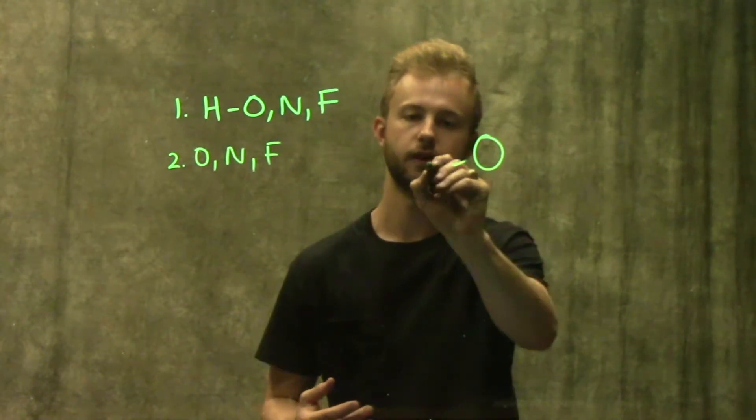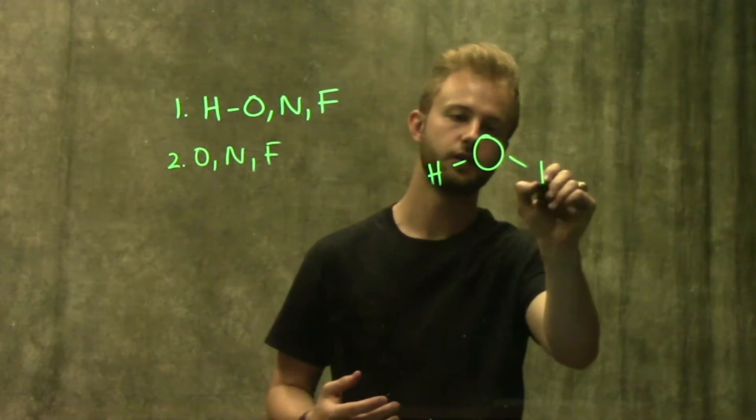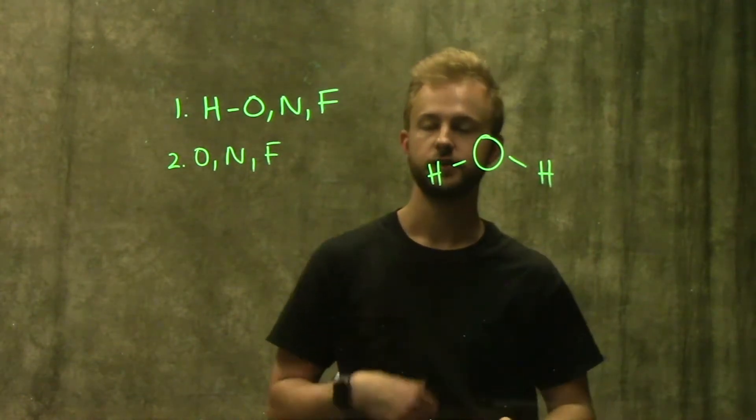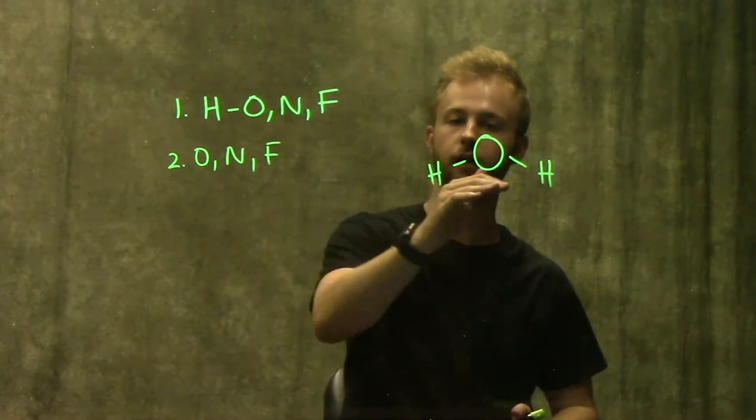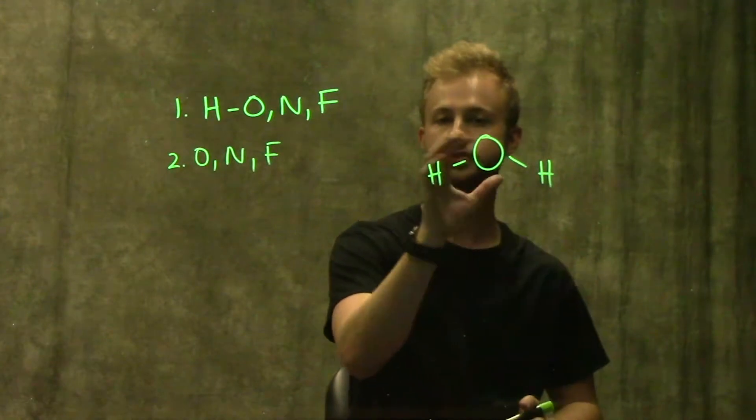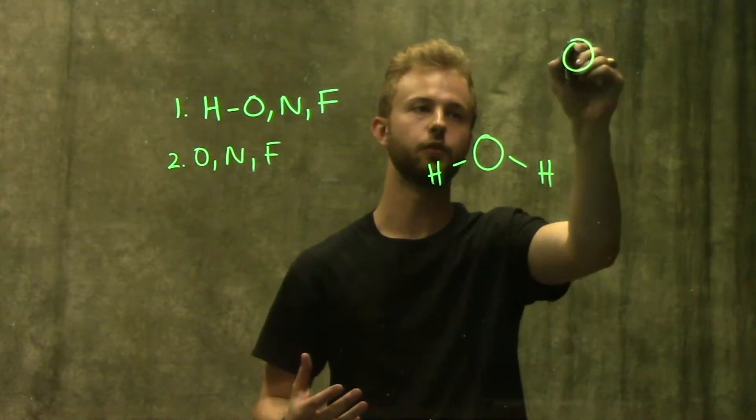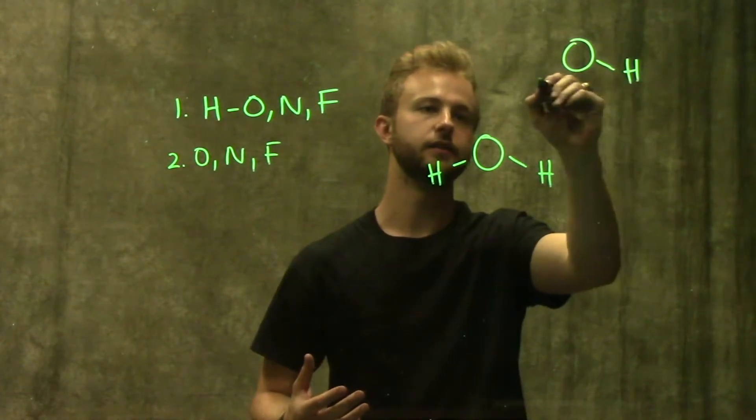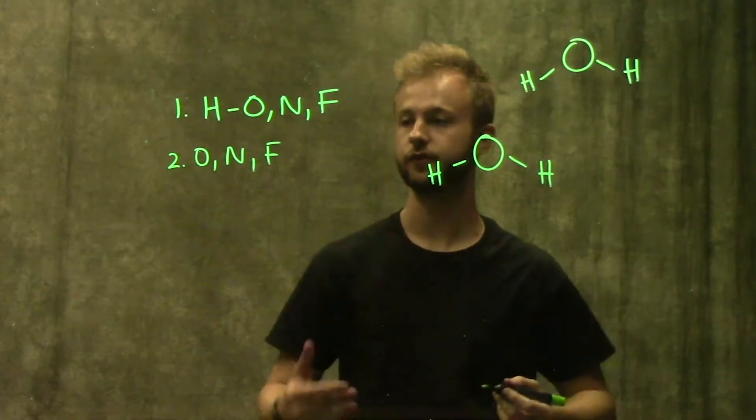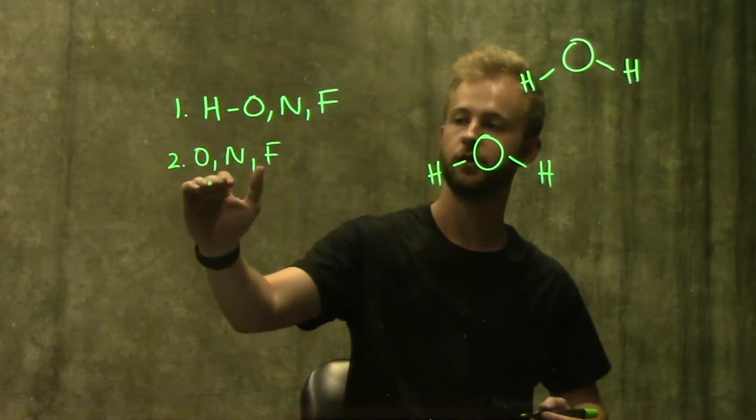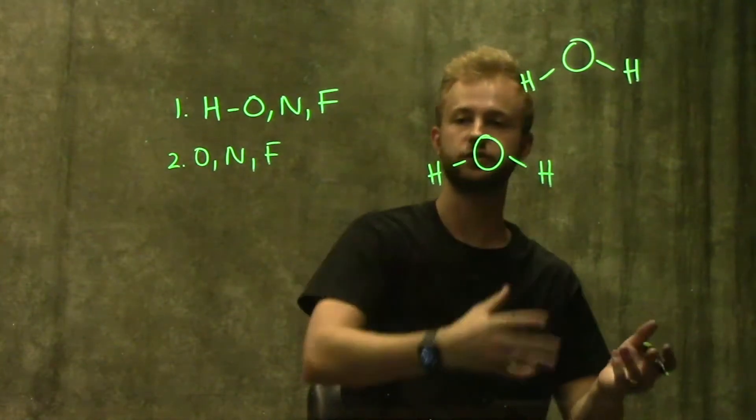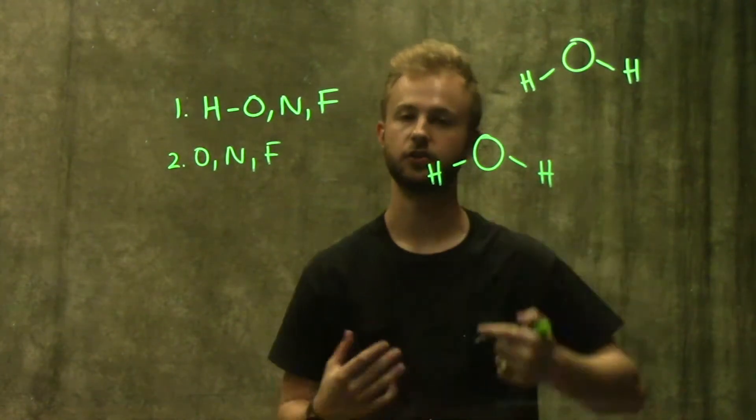Water has an oxygen attached to two hydrogens, so that meets our first requirement with hydrogens attached to an electronegative atom, and we're going to show this hydrogen bonding with another water molecule. The second water molecule also fulfills our requirements because it has an electronegative atom to accept the hydrogen bond, which is our oxygen.